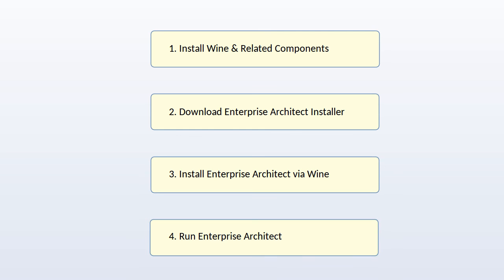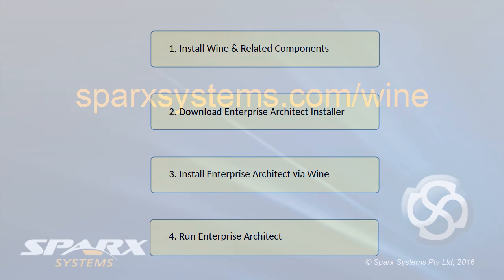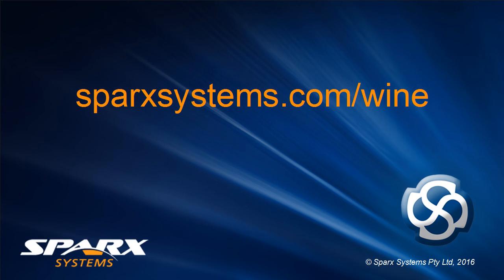In future tutorials we'll look at how to set up other products and features associated with EA on Linux or Mac, such as shared model repositories. But if you need more information in the meantime, please visit our EA Wine page at SparkSystems.com/wine.